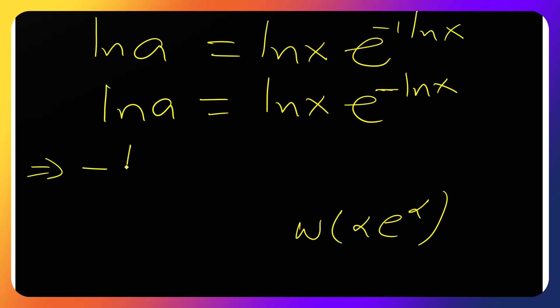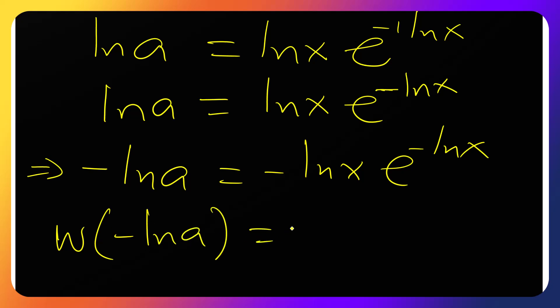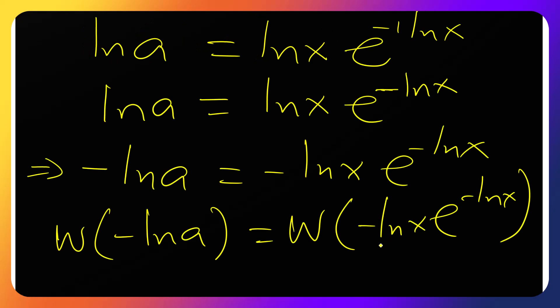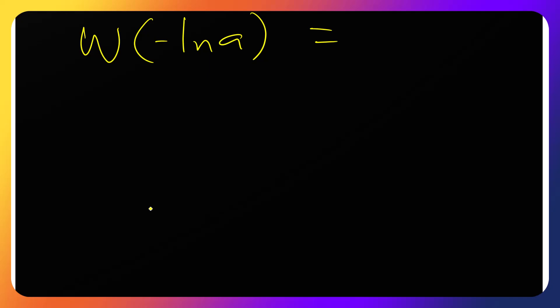So our multiplier would say we are negative. Minus ln of x, e to the minus. So from here we can proceed and take the W function. We have W function of minus ln of a. Okay, so W function, because the answer would be minus ln of x.